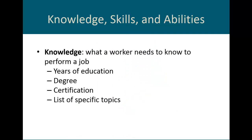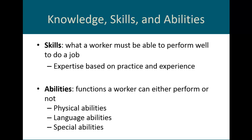You'll hear about KSA — knowledge, skills, and abilities — in various different functions. Knowledge is just what a worker needs to know to perform a certain level of job. Skills are what the worker must be able to perform for that job. And abilities are functions that a worker can either perform or not, such as physical, language, or special abilities. So you see the difference between knowledge, skills, and abilities.